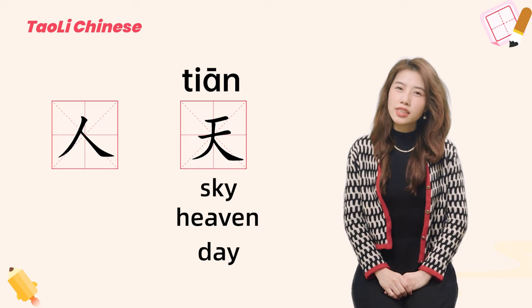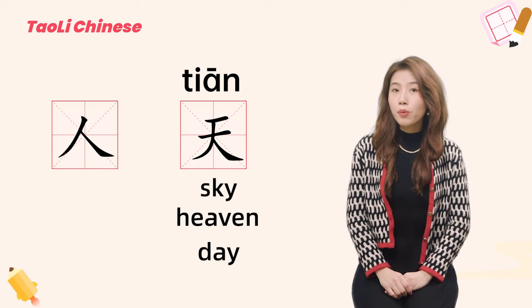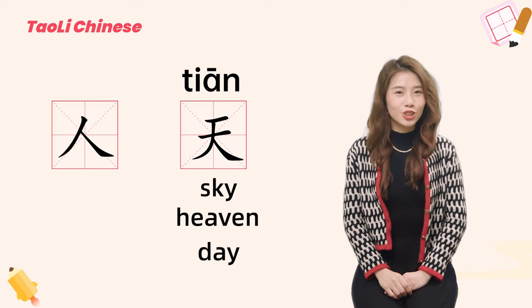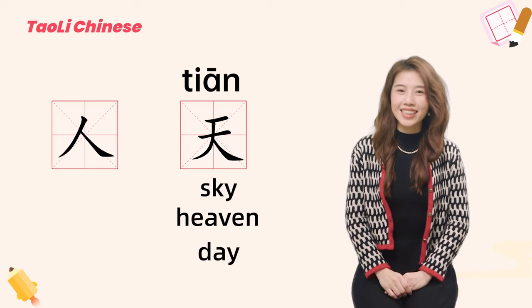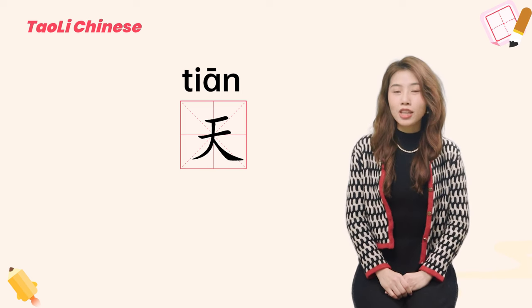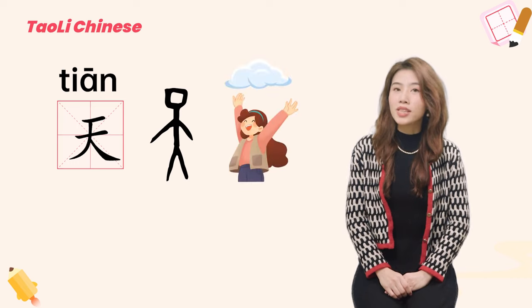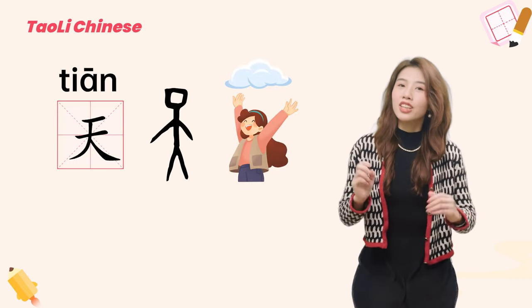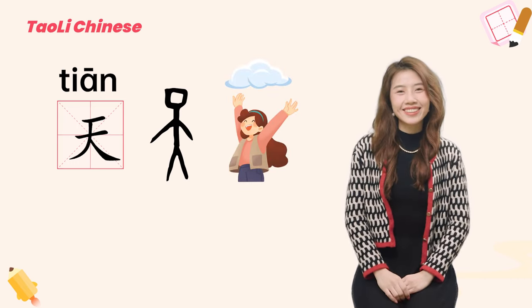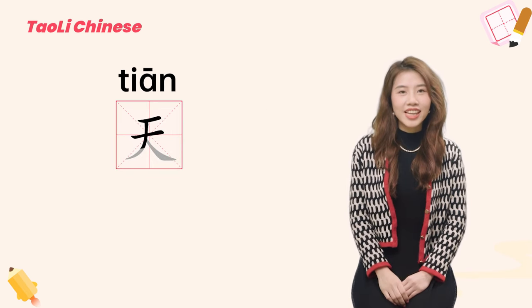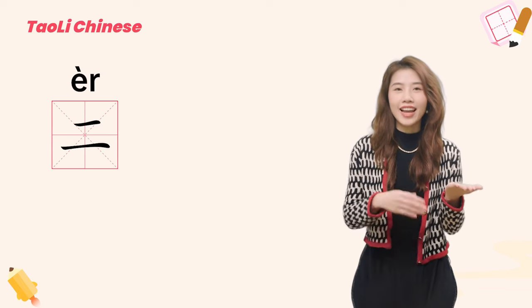You may notice that the character 天 looks very much like 大. So you can use this method to memorize: imagine 天 as someone who opens his arms and looks at the sky. 天 has four strokes.